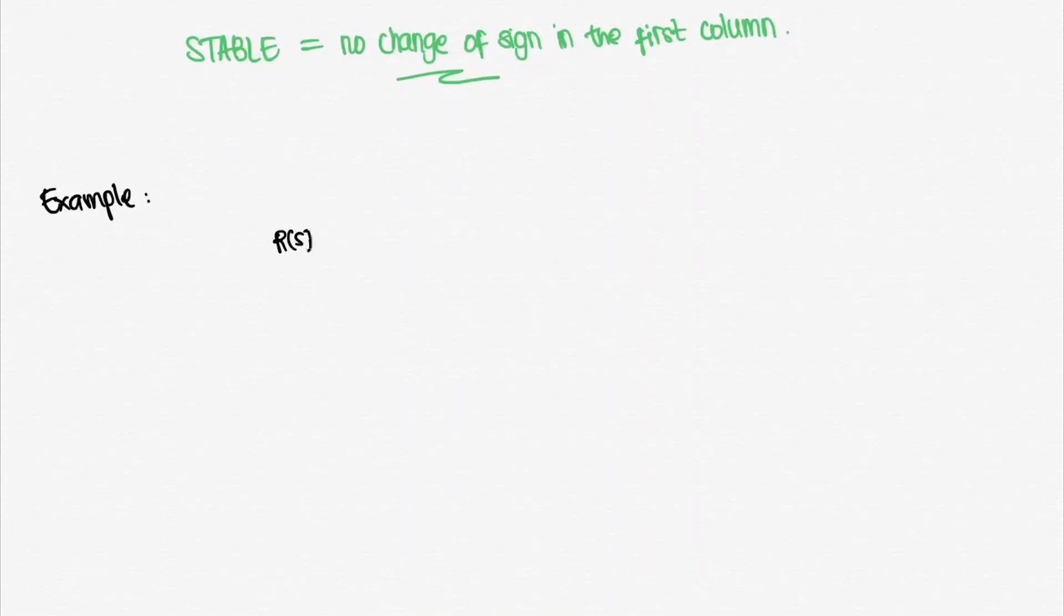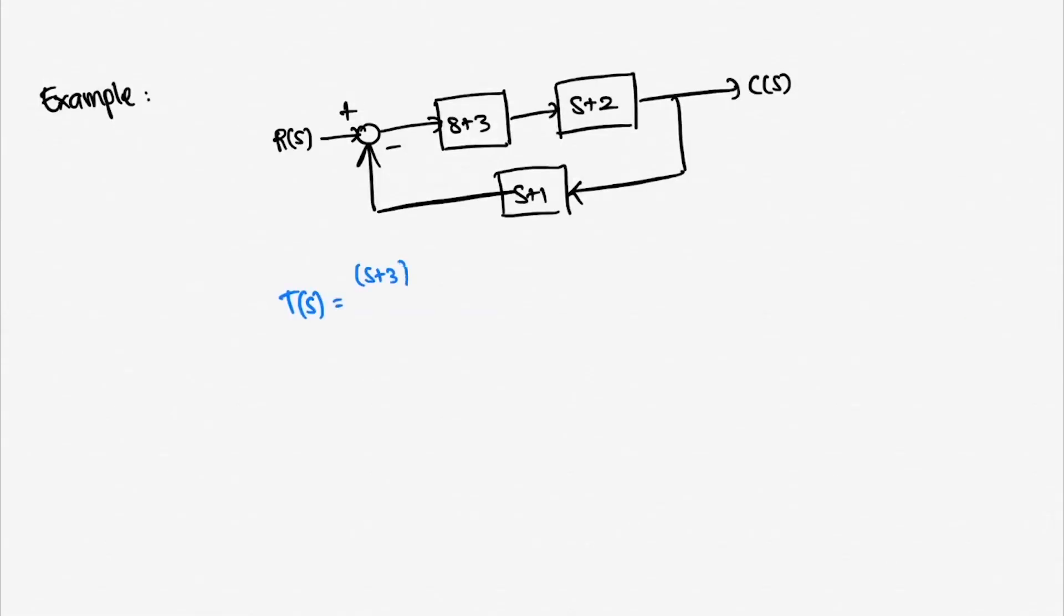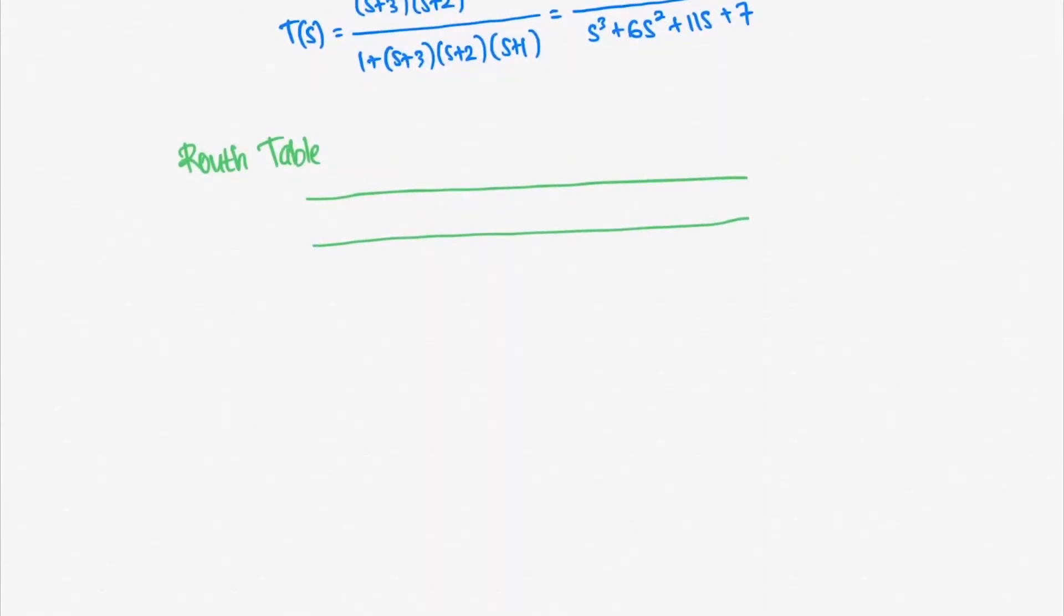Let's use an example. First step is obviously the simplification. Then we check for stability using the Routh's table. We will begin by drawing the table itself. Let's start by labeling the rows with the powers of s from the highest power of the denominator of the closed loop transfer function until s to the power of zero. Next, we will write the coefficients of the highest power of s in the denominator and list it in a zigzag fashion.